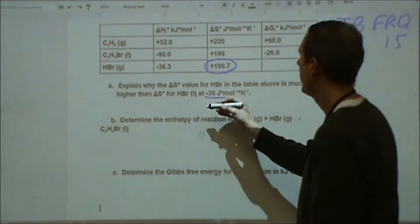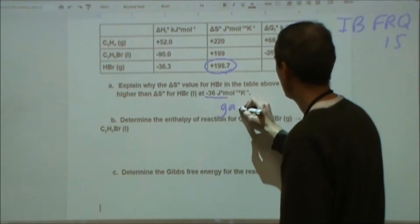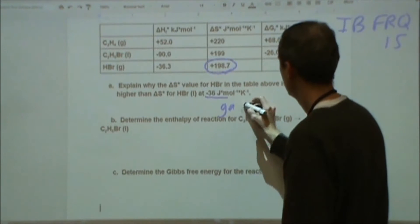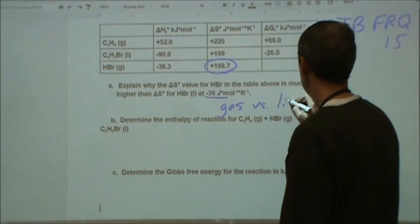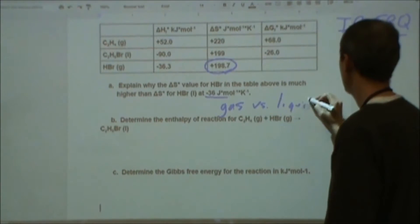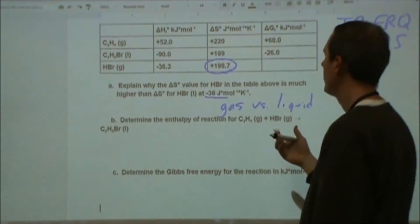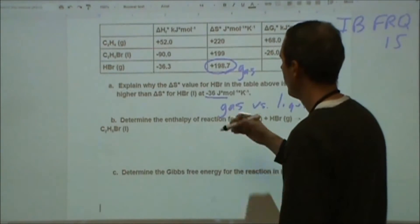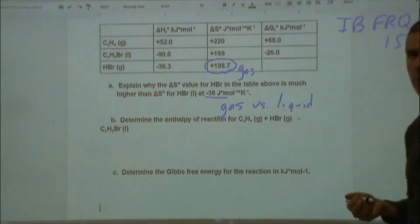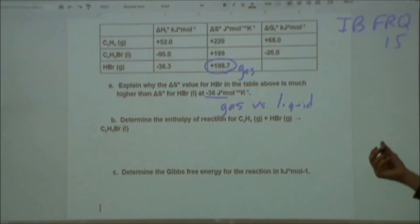So we're looking at entropy here, and we're comparing a gas versus a liquid. The reason that the value is significantly higher is because this one is a gas, while this one is for a liquid, and gases have higher entropies than liquid states. They have a wider dispersal of energy.